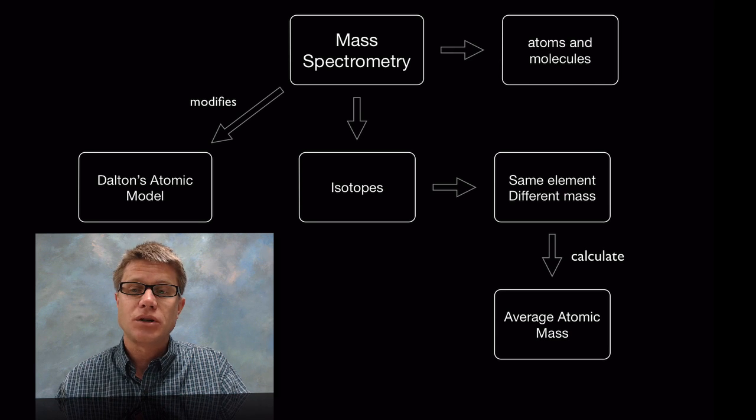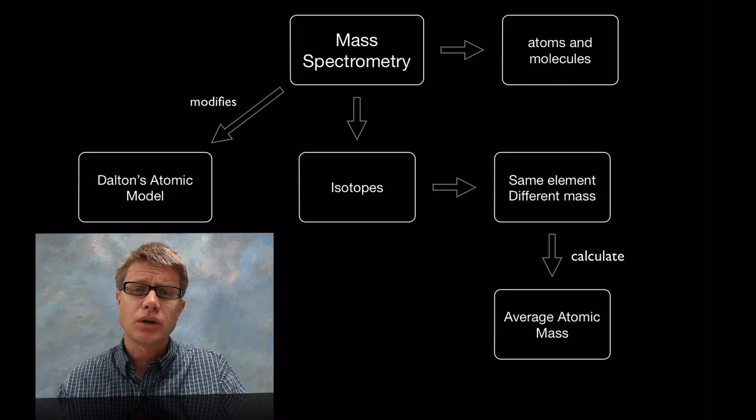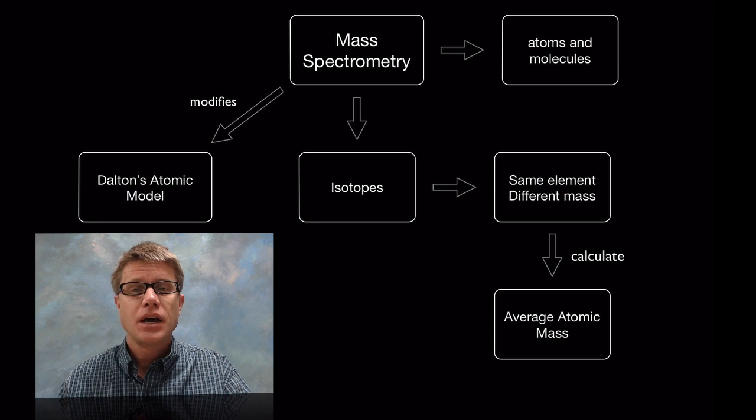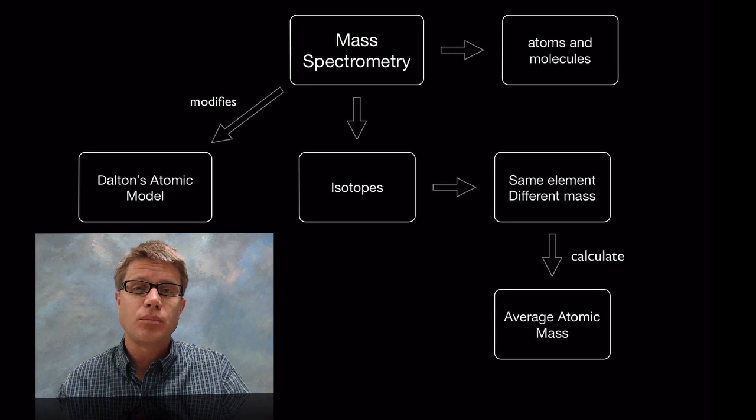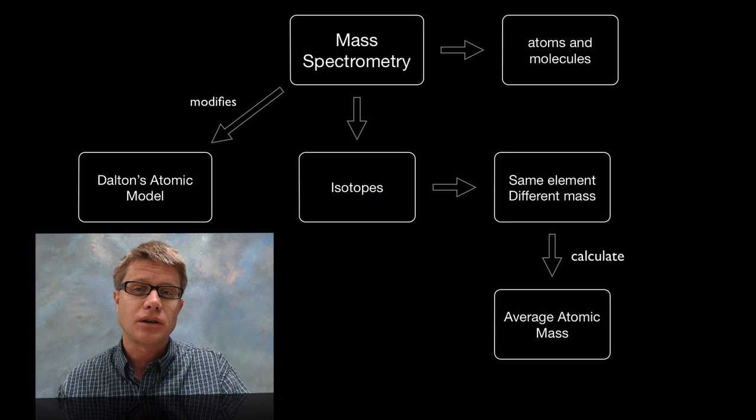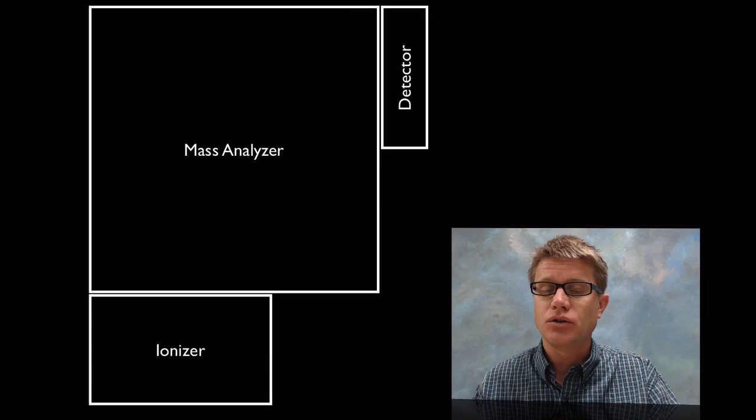Mass spectrometry can also be used to look at individual atoms, elements in a sample. We can even break apart big macromolecules and look at the fragments that are found within that or molecules within it.